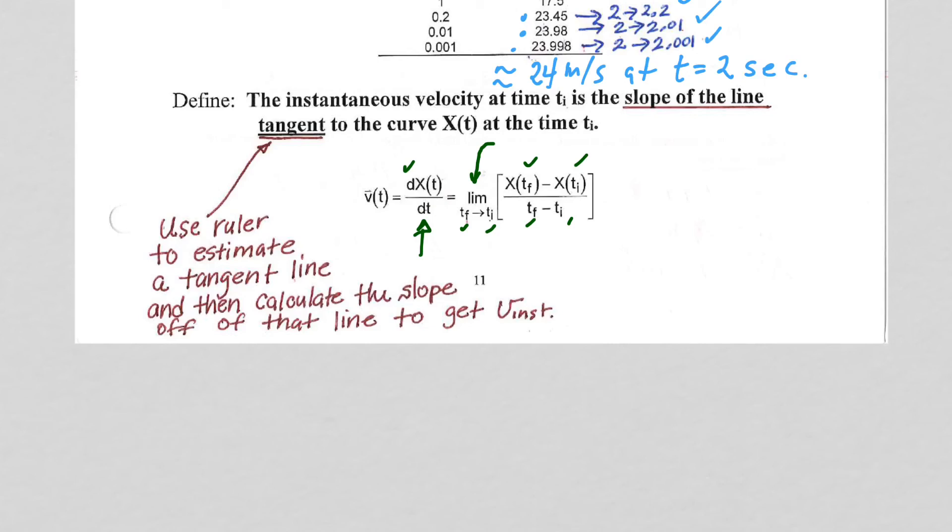For us right now, as it says here, we are going to just use a ruler to estimate the tangent line. And then calculate, literally calculate the slope of the tangent line off of the graph to get an estimate for the instantaneous velocity.